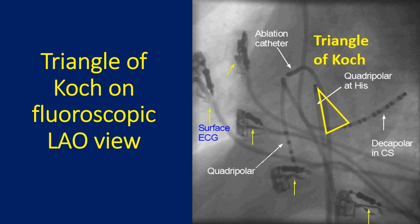In cases where AV node ablation is needed, such as atrial fibrillation with drug-refractory fast ventricular rate, the tip of the His-bundle catheter will guide the AV node location.